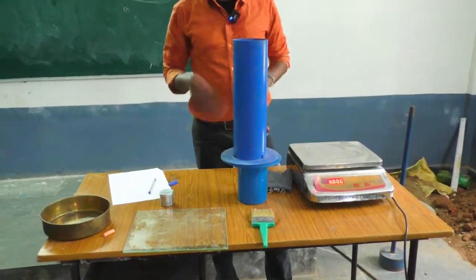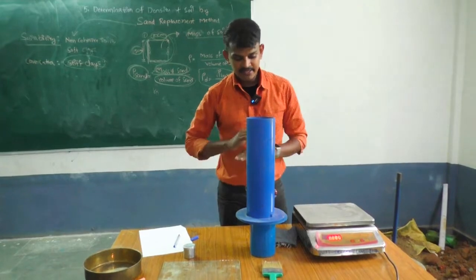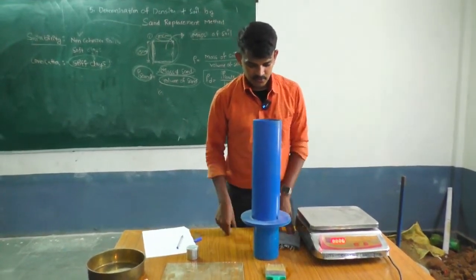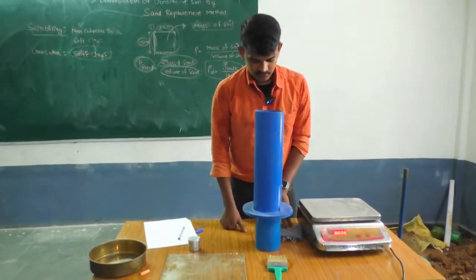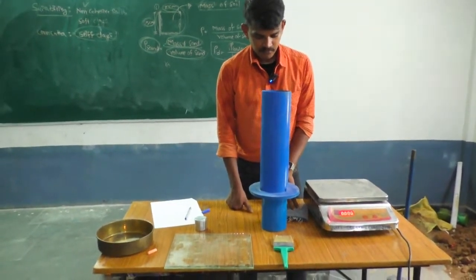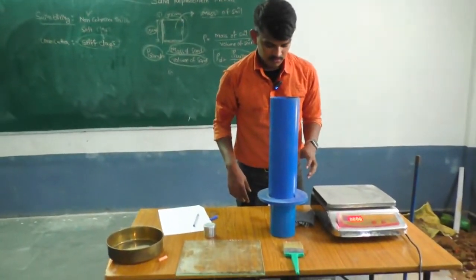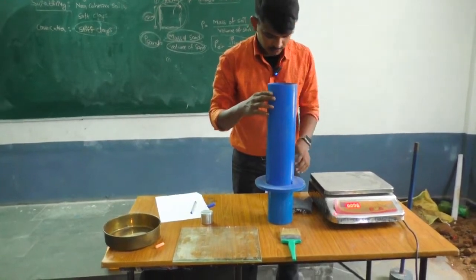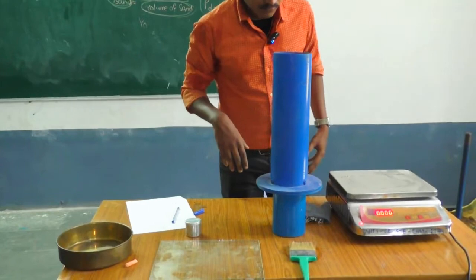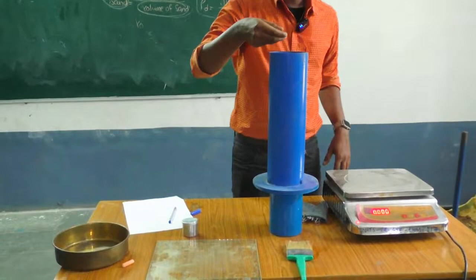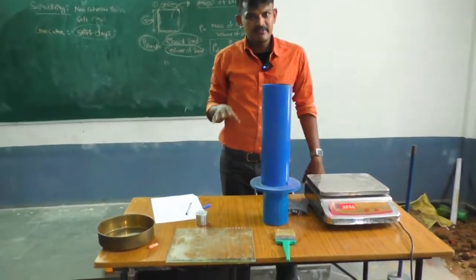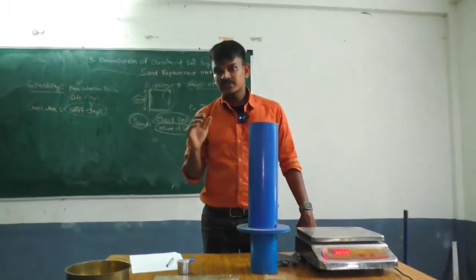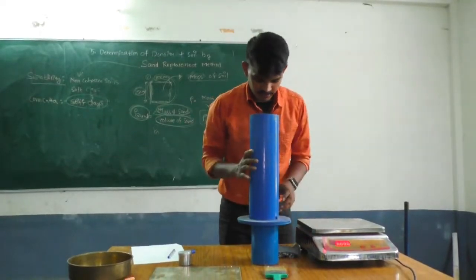We can observe the movement of sand flowing into the container. It stops when the container is completely filled. The sand used must be well-graded sand, passing 1 mm sieve and retained on the 600 micron sieve. This specific gradation is required so that the sand does not get stuck in the cylinder shutter.